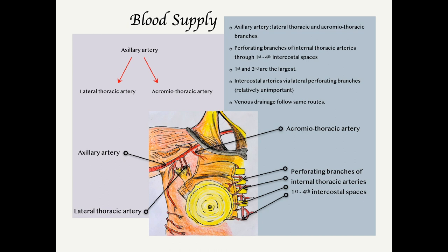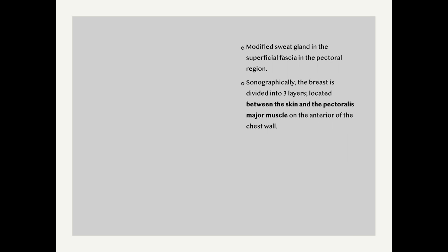Venous drainage also follows the same routes. The breast is a modified sweat gland in the superficial fascia of the pectoral region.